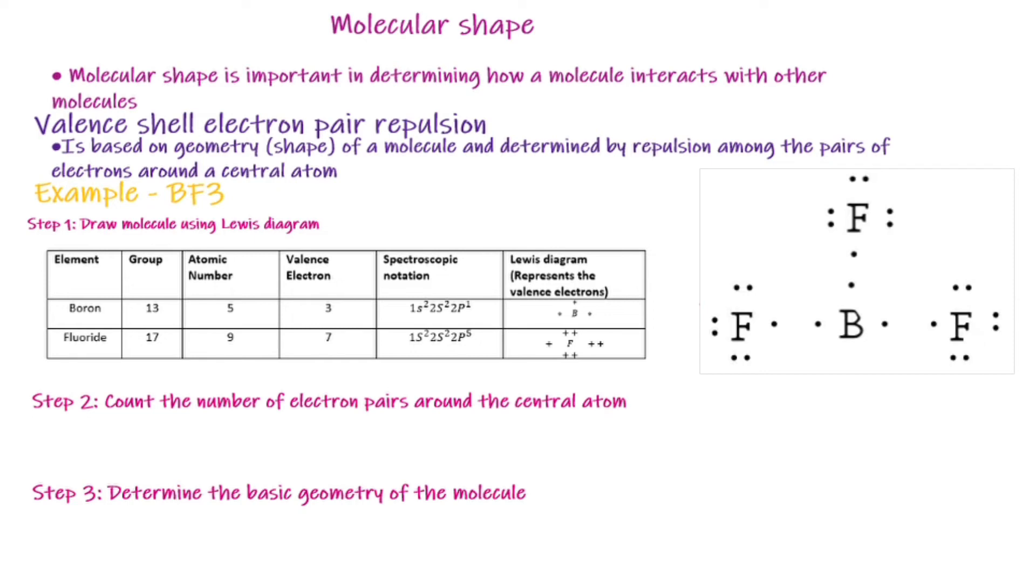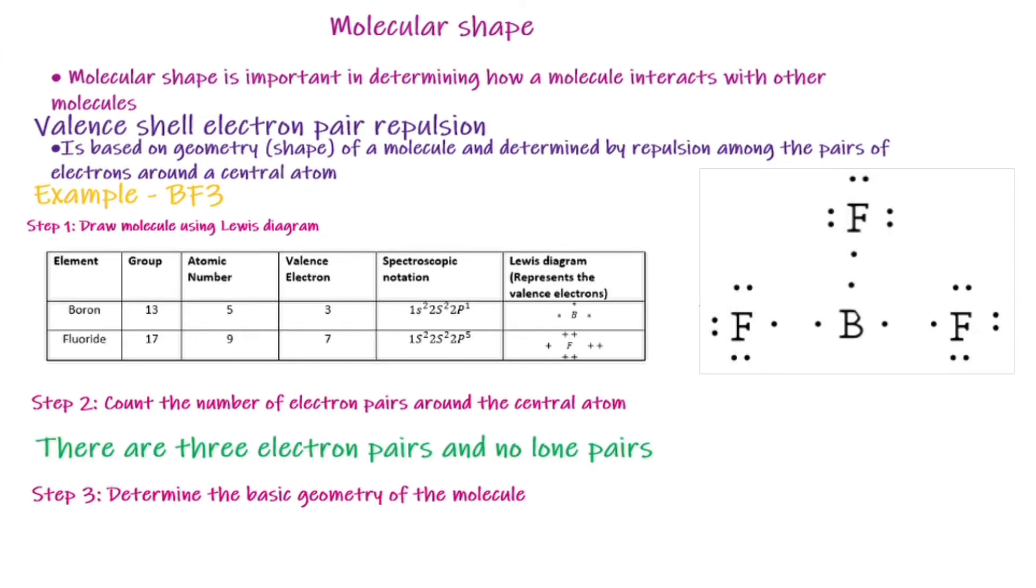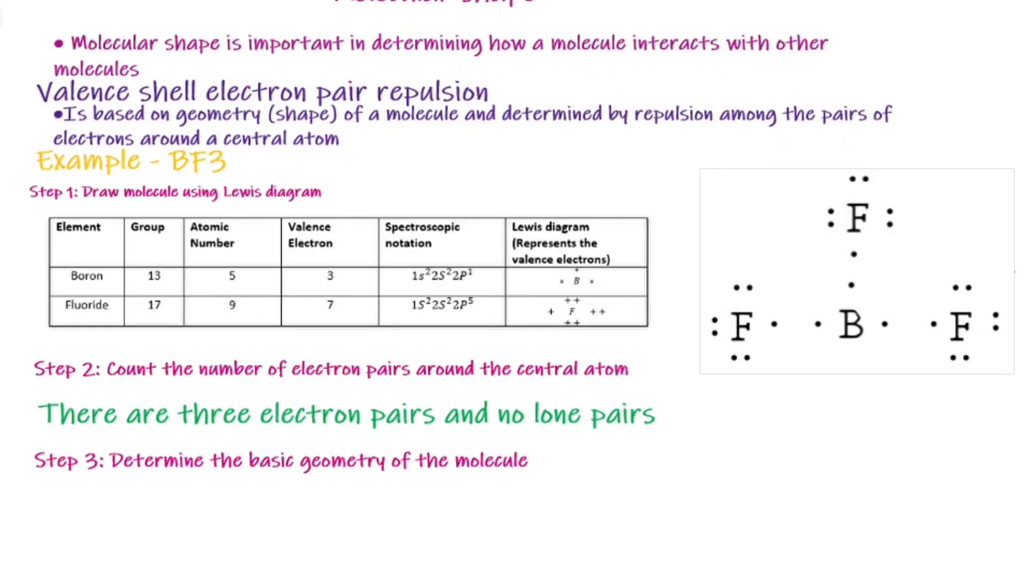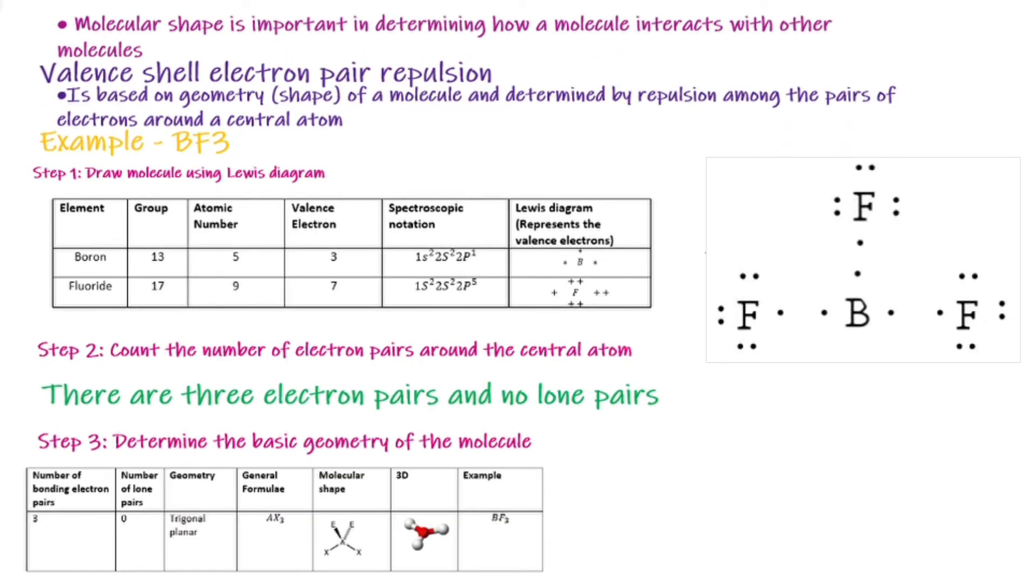Remember that the central atom is boron. If you closely count, you'll notice that we have 3 electron pairs and no lone pairs.